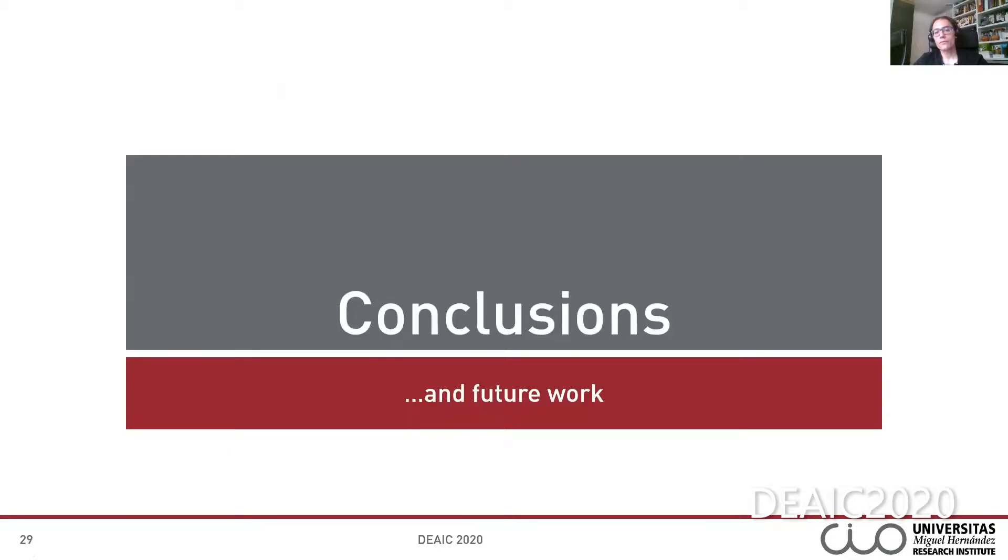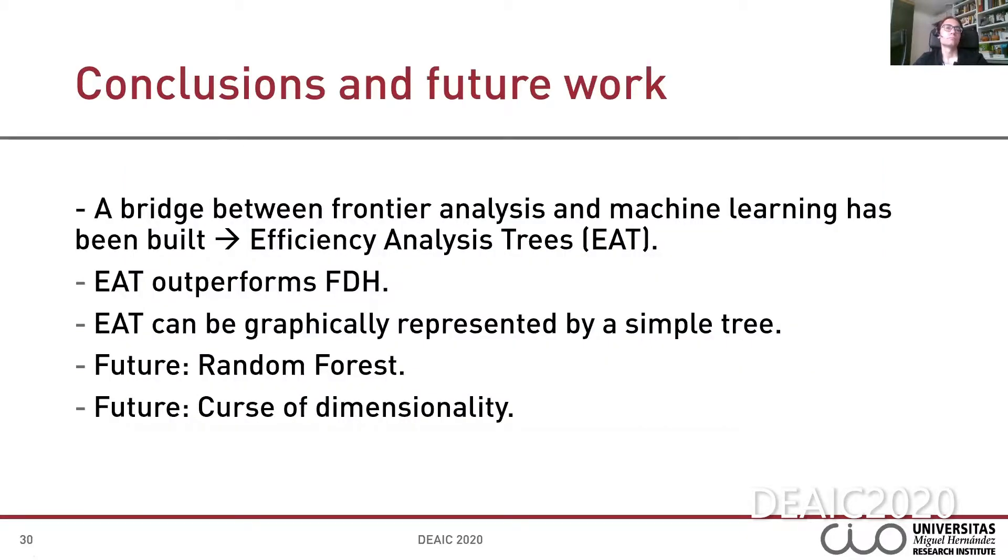Final conclusions and future work. Well, in this paper, a bridge between frontier analysis and machine learning has been built, introducing efficiency analysis trees, EAT. In some sense, EAT could be interpreted as pruned FDH, or FDH type out of sample predictor, overcoming the well-known problem of data overfitting. And the Monte Carlo simulations showed that EAT outperforms FDH. Additionally, EAT has several extra advantages. For example, EAT permits the graphical representation of the estimated production frontier through trees, even in the case of dealing with a high number of inputs and outputs. However, it is worth mentioning that a drawback of the new approach is, in comparison with the DEA technique, the computing time spent.